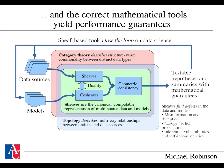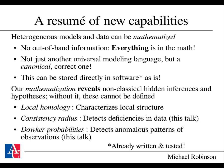Sheaves are the canonical way to represent multiple systems put together. Because of their unique mathematical position, they are able to find defects between data and models, locate misinformation and deception, identify unwanted feedback loops present in belief propagation networks, and identify inferential vulnerabilities and self-inconsistencies between system requirements and the actual reality of the system. This yields a variety of new capabilities for heterogeneous systems and models.